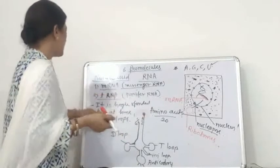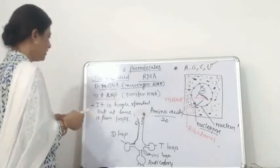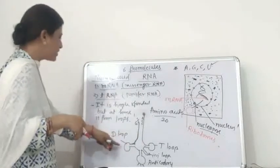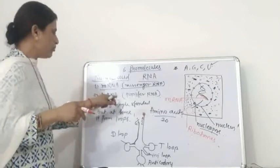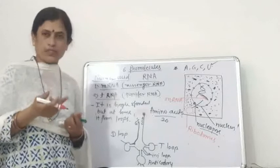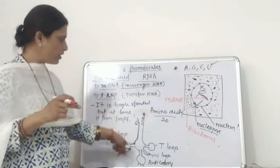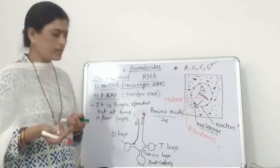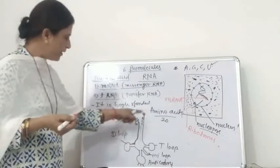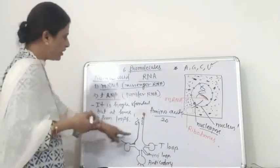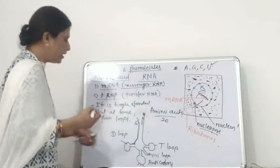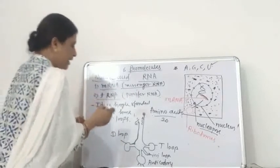tRNA is a single-stranded structure, but sometimes it is folded to form loops — three types of loops are present. The tRNA molecule is found in the form of two structures: one is the cloverleaf-like structure and the second is the hairpin-like structure. In the cloverleaf structure, three loops are present: the D loop, T loop, and the anticodon loop. In the third loop, the anticodons are also attached.